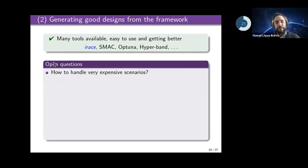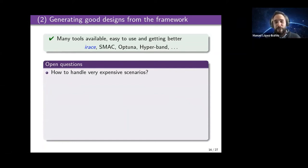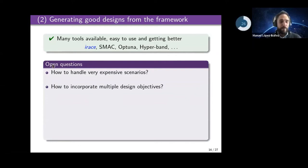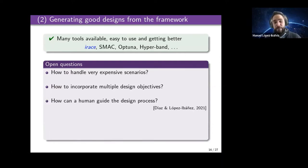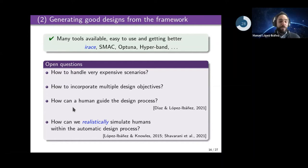Open questions remain. For example, if evaluating one design takes days or weeks, searching becomes very expensive. How to incorporate multiple design objectives in the design process hasn't been studied much. I'm personally very interested in how a human can guide the design process. And if the algorithms being designed are interactive — meant to interact with humans — you can't put humans in the automatic design process, so you need to simulate humans realistically.